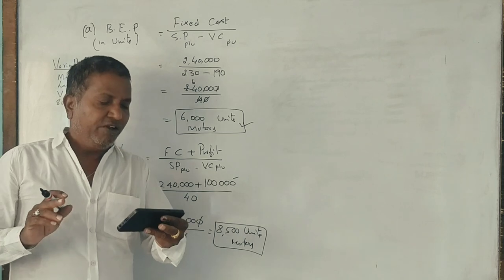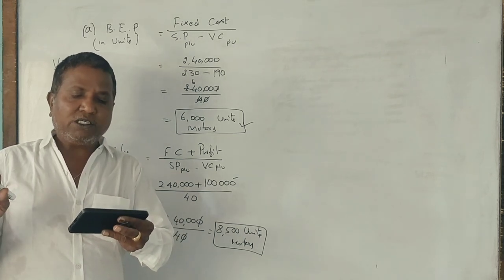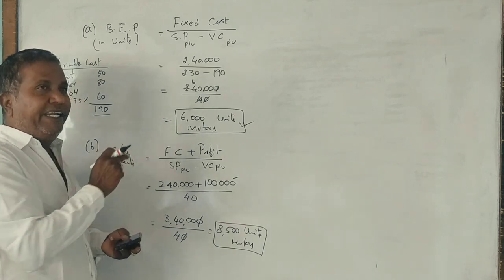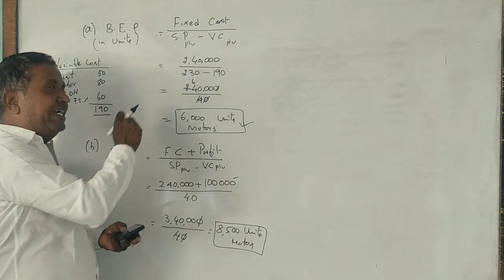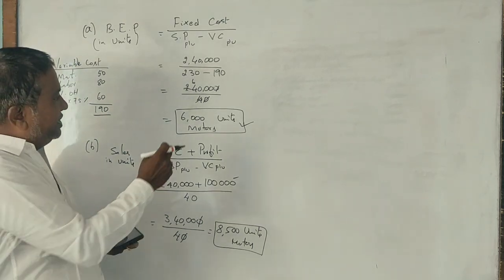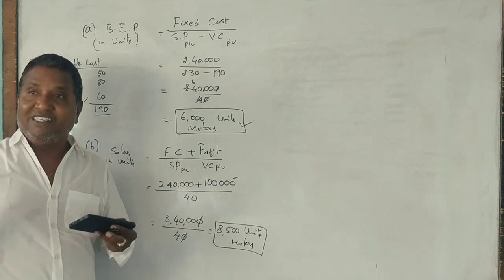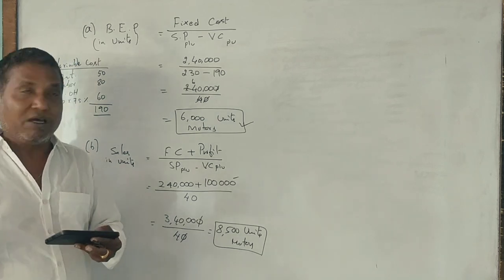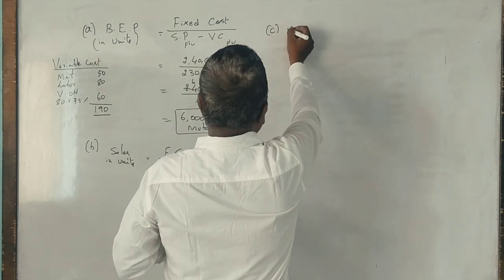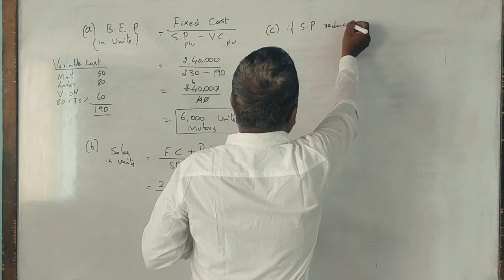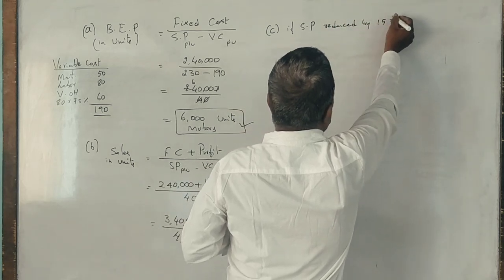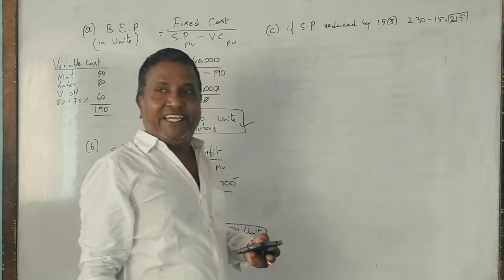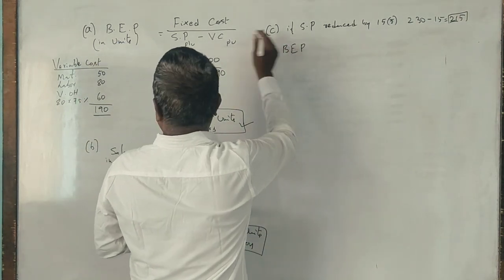If the sale price is reduced by 15 rupees, how many motors to be sold to break even? If selling price is reduced, number of units to be sold increases to break even. So 230 minus 15 equals 215 rupees selling price. The formula is the same formula: fixed cost divided by selling price minus variable cost per unit.